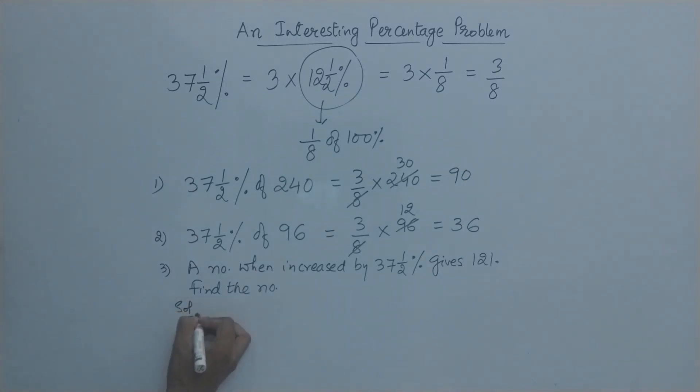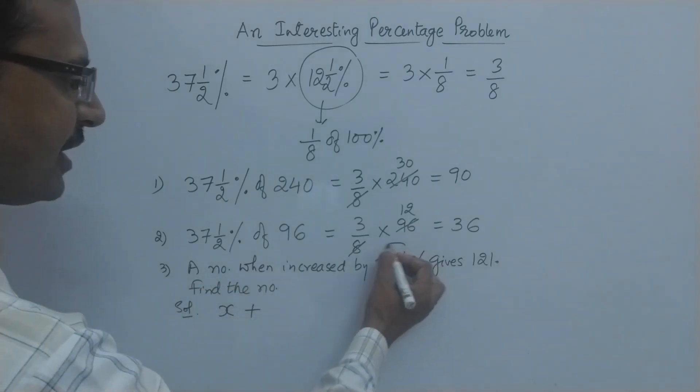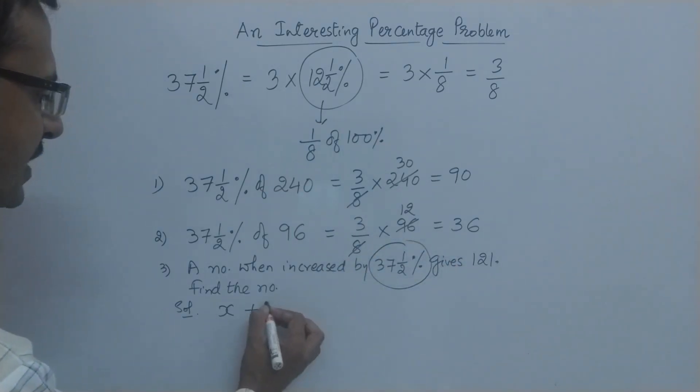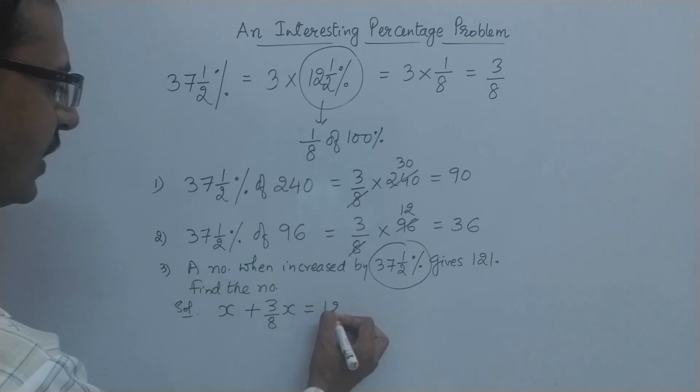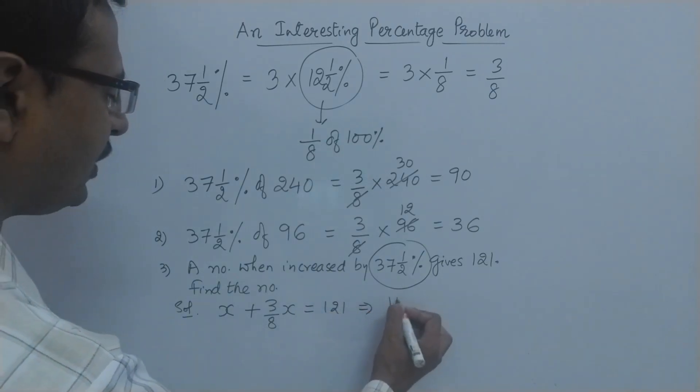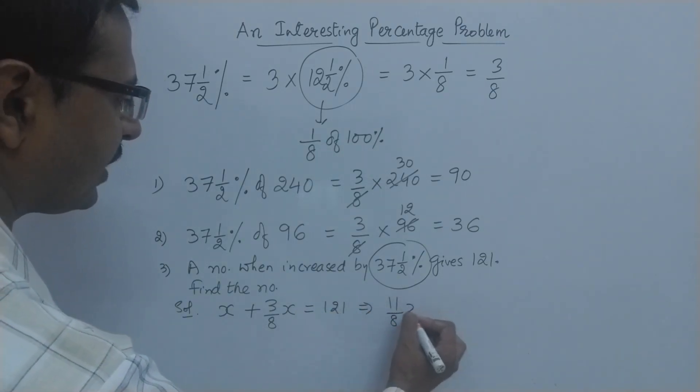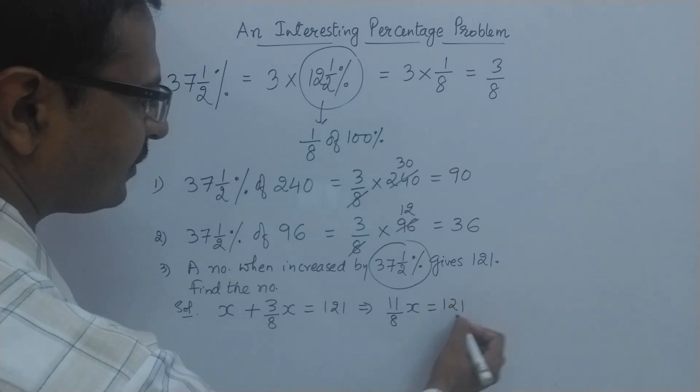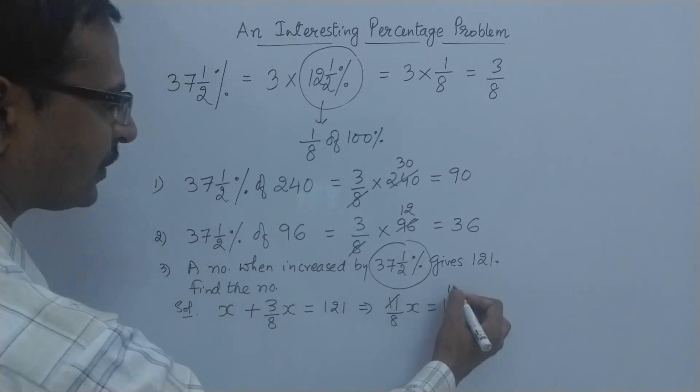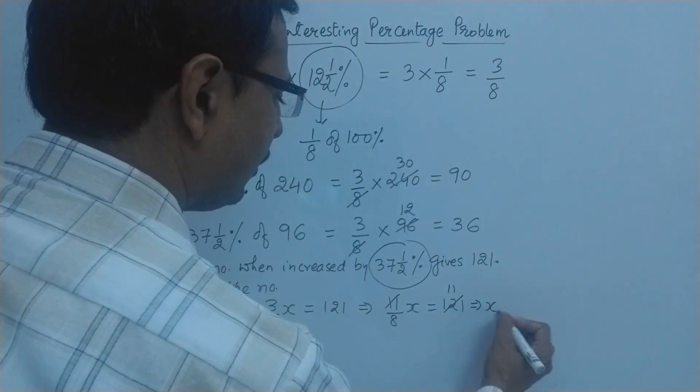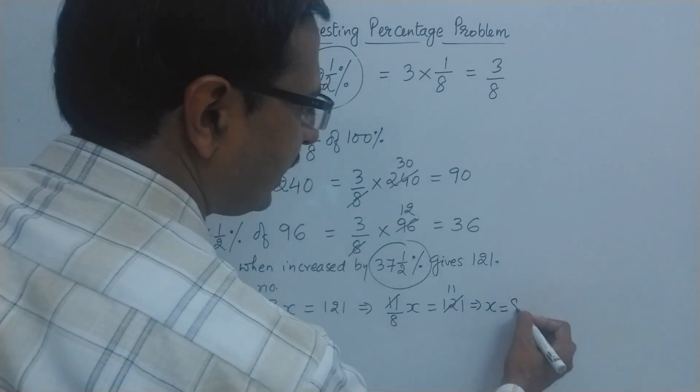All you need to do is assume that the number is x, and we are increasing it by 37.5%, that means 3/8 of x, and this gives us 121. This is a simple equation we need to solve to get our answer. You can see here, the answer is very simple. This goes 11 times, thereby giving you the value of x as 11 times 8 is 88. So the number is 88.